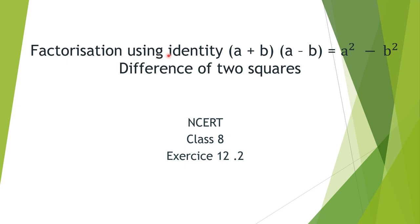Factorization using the identity (A+B)(A−B) = A² − B², the difference of two squares, in CBSE Class 8 Exercise 12.2.